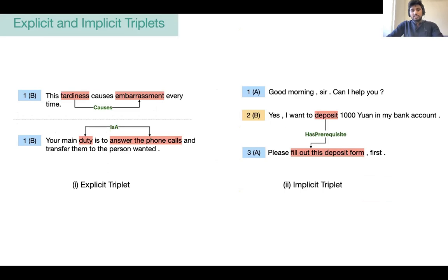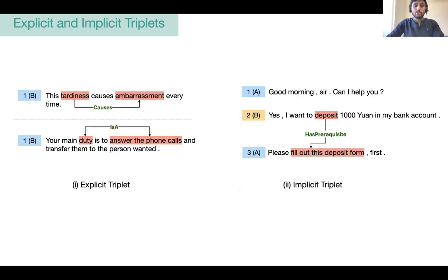In this work, we introduce the CIDR dataset, which has annotated triplets extracted from dialogues. The triplets in the dataset can be categorized into two classes depending upon how they are formed. Number one is explicit, shown here on the left, where the explanation is verbatim in the triplet. These kinds of triplets can be easily extracted by a parser using syntactic clues or pattern matching.